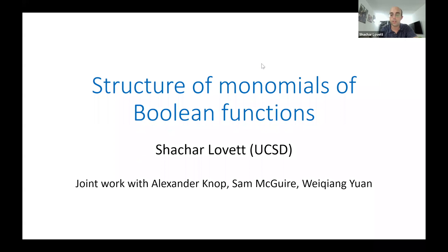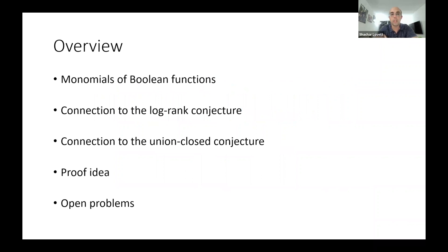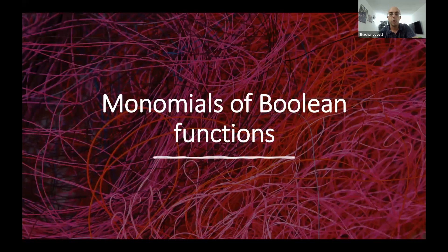Here's the overview for the talk. I'll start with a brief overview of boolean functions — what we want to understand about the monomials of a boolean function and their structure. Then I'll tell you about two interesting connections: one is our original motivation related to a conjecture called the log-rank conjecture, which many of you have probably heard about, and another connection to the union-closed conjecture in combinatorics. Then toward the end I'll tell you some stuff about the proof and open problems, but mostly I want to convince you why this problem is interesting.